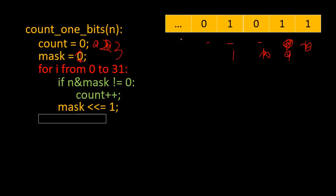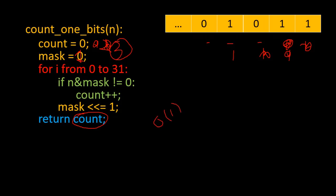We use triple dots to represent we have some bits on the left whose values are zero. We'll have at the end count equals three, and that's what we return. This solution takes constant time complexity because this for loop always executes 32 times, and 32 is a constant. It also takes constant space complexity — we're just using two variables: count and mask. Hope this concept was clear. Thanks for watching, I'll see you in the next video.